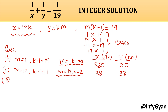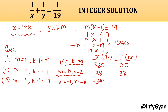Third case: m is equal to negative 1 and k minus 1 is equal to negative 19. So m equals negative 1 and k equals negative 18 (since negative 19 plus 1 is negative 18). Then x is 19 times negative 18, which is negative 342. And y is km, so negative 1 times negative 18, which is 18.